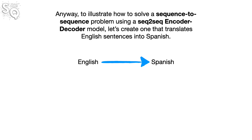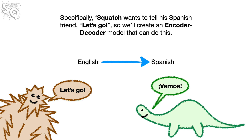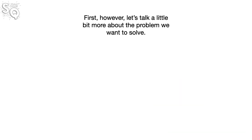Transformers form the basis of big fancy large language models like ChatGPT. To illustrate how to solve a sequence-to-sequence problem using a seq-to-seq encoder-decoder model, let's create one that translates English sentences into Spanish. Specifically, Squatch wants to tell his Spanish friend 'let's go,' so we'll create an encoder-decoder model that can do this. First, however, let's talk a little bit more about the problem we want to solve.